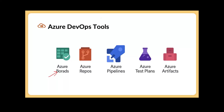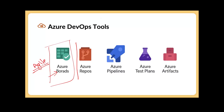Azure Boards is similar to the Jira board. When we use Agile — which is a mindset and a culture — and we are doing agile software development, we need a tool to manage our tasks, manage our project, and manage our features. For that we use a tool, and that tool is Jira board. If you don't want to use Jira board, you can use Azure Boards and get each and every feature available in Jira.